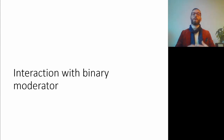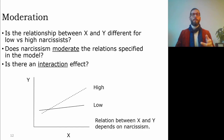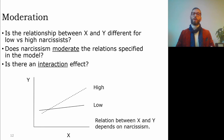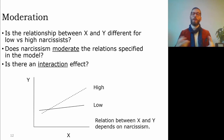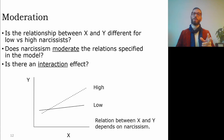Now let's look at an example with a binary moderator. With a binary moderator we have two groups and expect that the regression coefficient differs between them. This brings us back to the narcissism and problematic smartphone use example. We asked: is the relationship between rejection and excessive smartphone use different for low versus high narcissists?